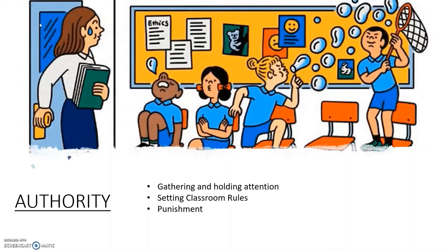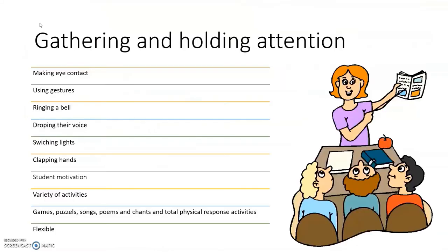Authority includes gathering and holding attention, setting classroom rules, and punishment. Before gathering attention, teachers should not start a new task or activity without getting the attention of all students in the class. Teachers can use different ways to begin a new task, such as making eye contact, using gestures, ringing a bell, dropping their voice, switching lights, clapping hands, and so on.